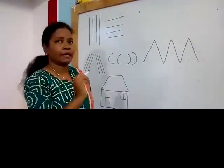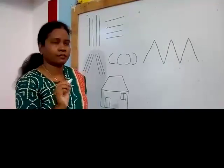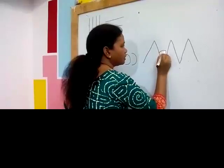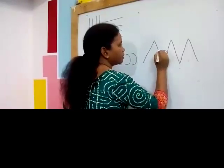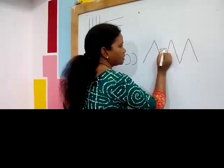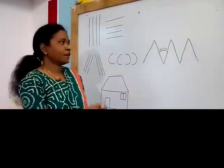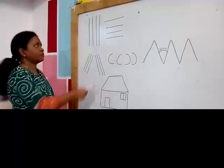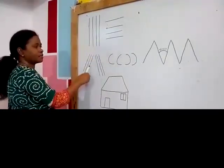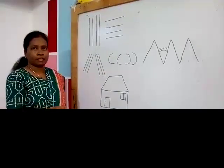Now we will make a sun with the help of curve. This is the curve. So children, now sun is also ready. You have seen — with the help of standing line, slanting line, and curve line, we can make so many things.